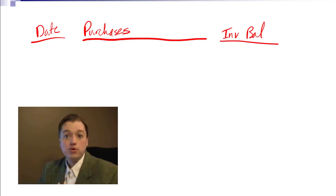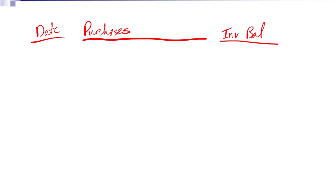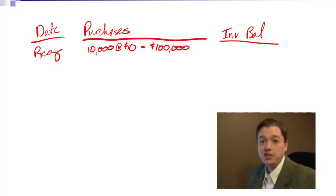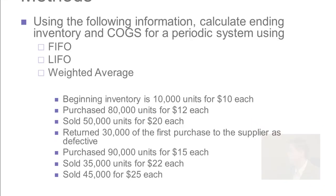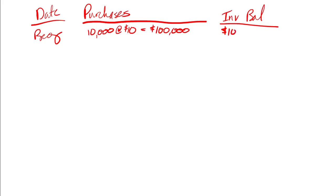Let's go ahead and take a look at just the purchases. We're not going to worry about the sales because we're assuming they happen later. Let's start with our beginning balance — this isn't really a purchase but we'll put it here: 10,000 units at $10 each is $100,000. Our inventory balance at this point is $100,000, because all I've got is my beginning inventory.